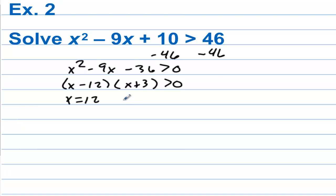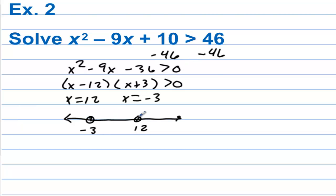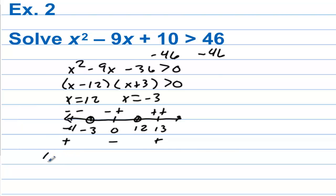If we plug 12 in, this would be 0. And if we plug negative 3 in, we get 0 as well. So let's put these on a number line: we have negative 3 and 12. This doesn't have an equal-to part, so we're not going to include negative 3 or 12. Let's test negative 4, 0, and 13. Negative 4 gives a negative times a negative — that's positive. Plugging in 0 gives a negative times a positive — that's negative. Plugging in 13 gives a positive times a positive — that's positive. We want values greater than 0, so we have negative infinity to negative 3 (don't include negative 3), and then 12 to infinity.